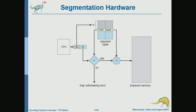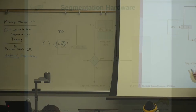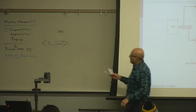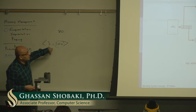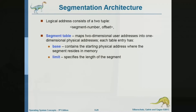Otherwise, if the offset passes the limit check, we add the base from the segment table to the offset to get the physical address. The base is the starting address of segment 3 in physical memory. So the segment table has a base and a limit, and each address consists of a segment number and an offset — adding the base to the offset gives the physical address.